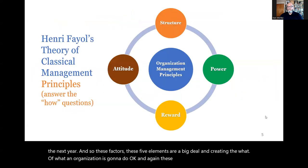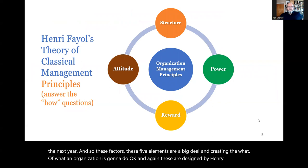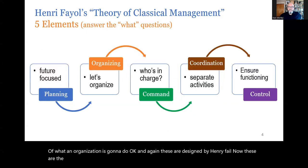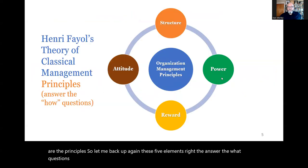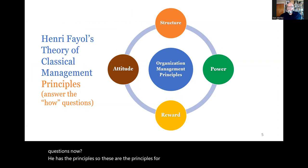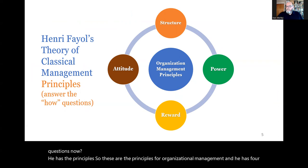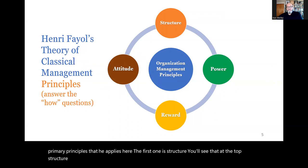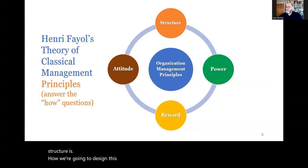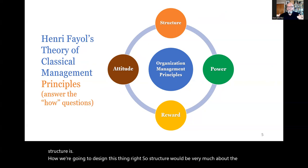These five elements were designed by Henry Fayol. Now let's look at his principles for organizational management — he has four primary principles. The first one is structure: how we're going to design this thing. Structure is very much about the hierarchical design — whose accounts to who, who answers to who — so that we can know not only what's going to happen, but how it's going to get done.